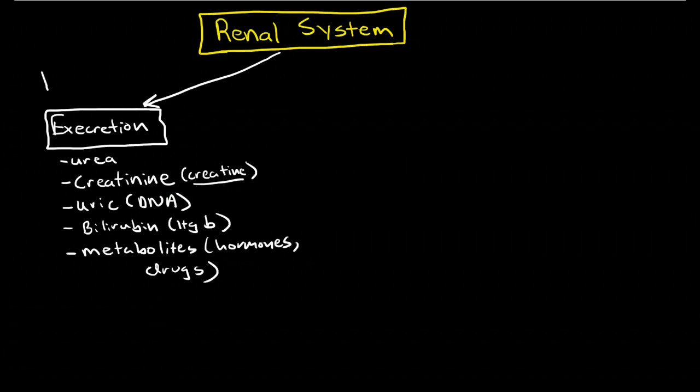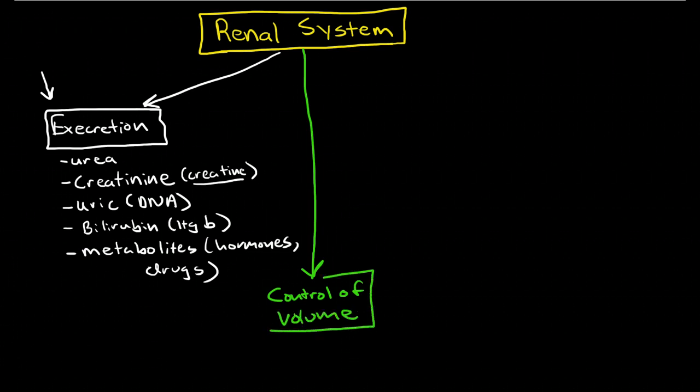So this is what people think of first when they think about the functions of the renal system. But there are many other functions that are very important. The kidneys have an important role in controlling volume status, and by controlling volume status, it has a significant effect on cardiac output and blood pressure. Remember cardiac output equals stroke volume times heart rate. By controlling volume, we're controlling stroke volume by increasing preload to the heart.